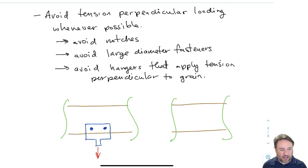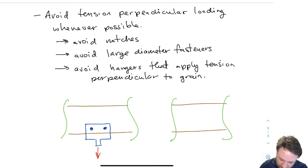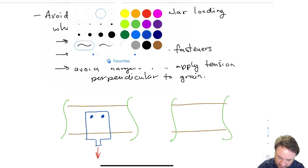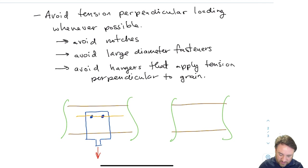Another example from the previous video on hangers: if I want to hang something from a wood beam using a steel plate bolted to the side of the beam, and I place those bolts very low, my splitting resistance will also be very low — this is a particularly bad connection. Moving the bolts up near the top is somewhat better, but failure will still be splitting along the bolt line, so it's not a great detail.